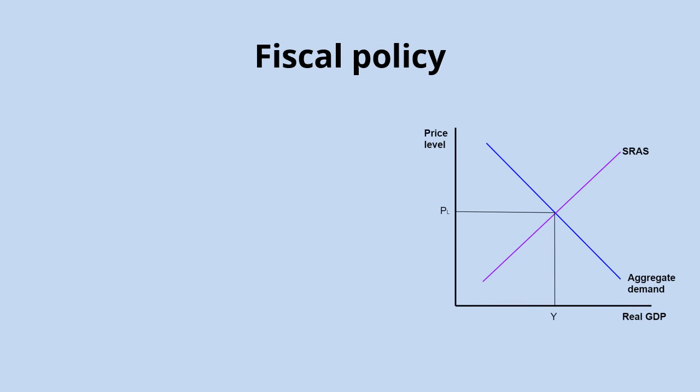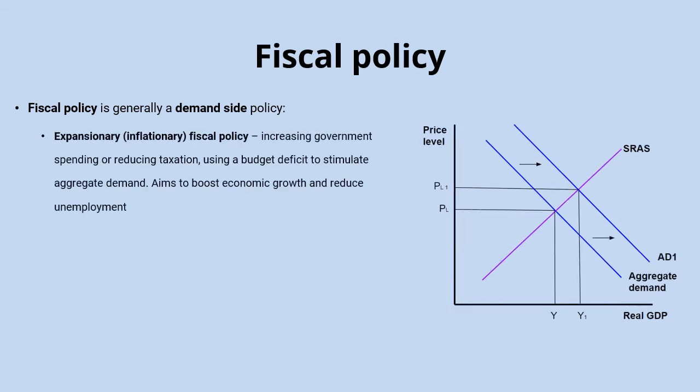In terms of the government using fiscal policy — changing levels of taxation or government spending to achieve macroeconomic objectives — it's generally a demand-side policy, meaning it works by influencing aggregate demand. Expansionary fiscal policy works by increasing government spending or reducing taxation, pushing the budget position towards deficit and stimulating aggregate demand. Increasing aggregate demand shifts the curve to the right, raising real GDP and reducing unemployment, though the downside is that the price level also rises, causing inflation.